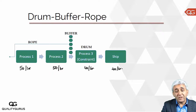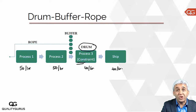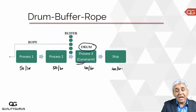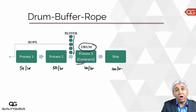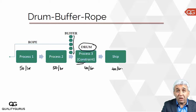Since process three is the constraint, it is the drum — the one setting the pace of the whole line. In front of the drum we have a buffer: these are extra units which have gone through process two. We need to keep a certain level of inventory in front of the drum, in front of the constraint.